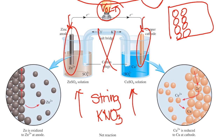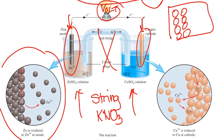Let's now look at what was really going on at the solid surfaces of the anode and cathode. Looking at the left-hand side of the slide, this was using zinc at the anode. Remember: at the anode, oxidation occurs. Cathode is where reduction occurs. So starting at the anode, remember our mnemonic 'OIL RIG.'